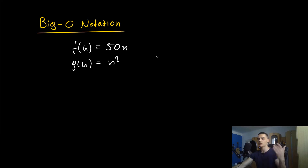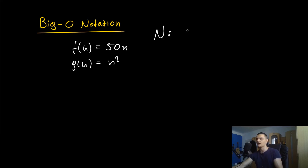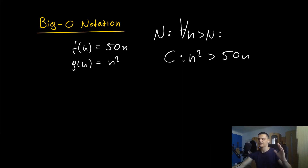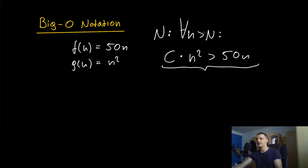Mathematically, there is a point from which n² is going to limit 50n — meaning there is a starting index, let's call it uppercase N. From this starting index on, for each n larger than N, n² is going to be larger than 50n. For Big O notation, we can add a constant c — this constant could be a trillion, a million, whatever — multiplied by n². If we can choose such a constant and starting index and that inequality is always true, then we can say 50n is in Big O of n².